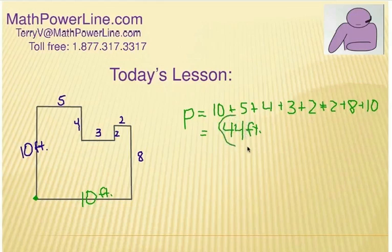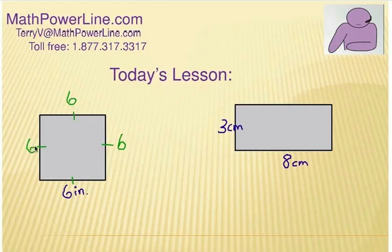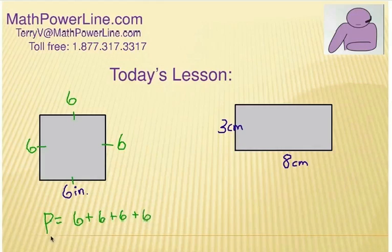Now, if this is a square — I'm going to make sure I mark it that way — all four sides are the same and these are right angles. If one side is measured and we know it's a square, then obviously we have six all the way around. Some students will make the mistake of doing six times six — that's the area of thirty-six. Remember, perimeter is if we're going to walk all the way around. So the perimeter in this case is going to be six plus six plus six plus six, and the answer would be twenty-four inches.